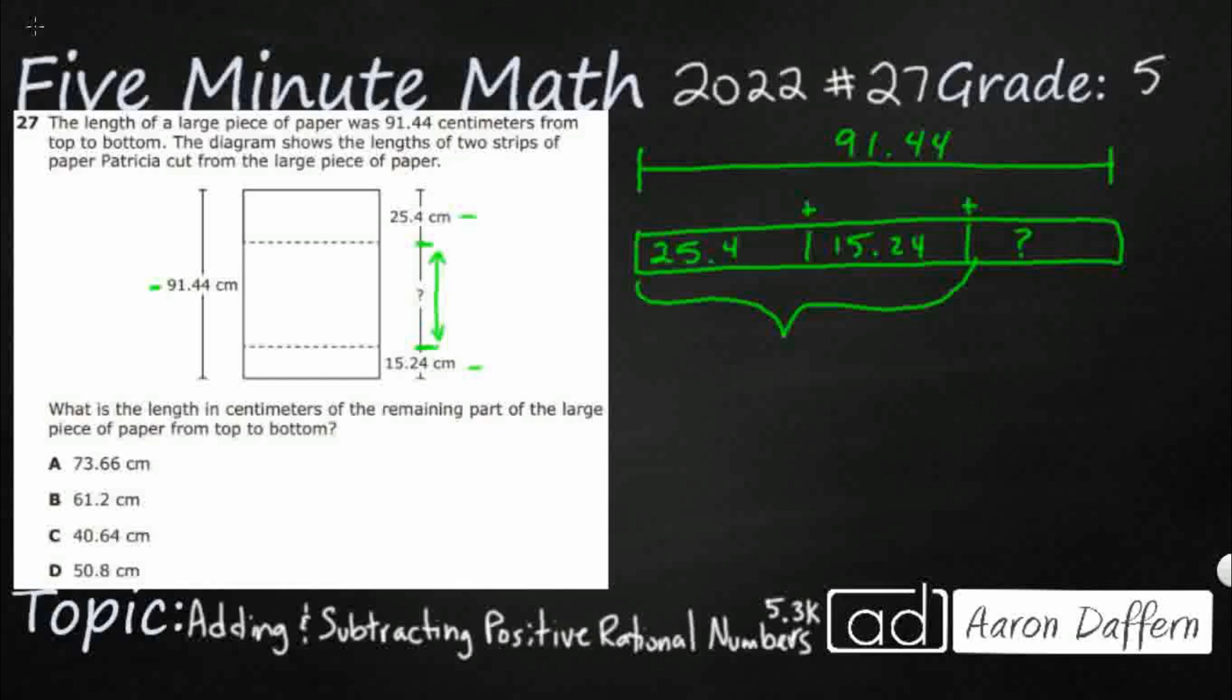When I am adding two decimals, it is very important that we line up the decimal points. So watch this. I've got 25.4 and I've got 15.24. You've got two options when you line it up like this. One, you can just leave this space right here and just not count it. There's just nothing there.